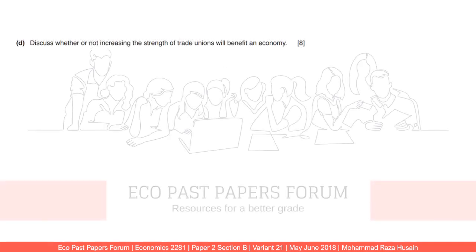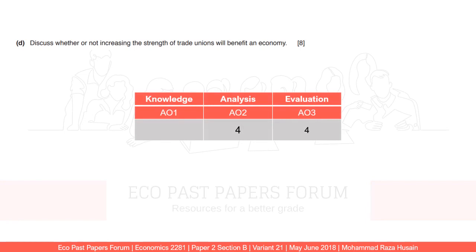The question is: 'Discuss whether or not increasing the strength of trade unions will benefit an economy.' You get four marks for analysis and four marks for evaluation. Note that the question talks about increasing the strength of trade unions — it doesn't simply ask how a strong trade union benefits an economy. If you answer in very general terms and just explain the advantages of trade unions, you may lose marks, especially on evaluation.